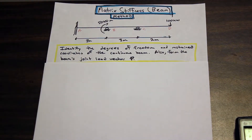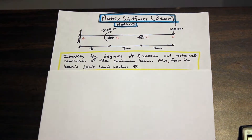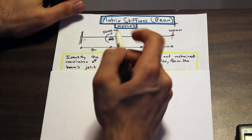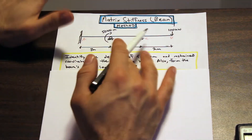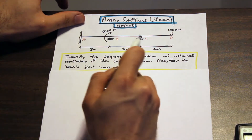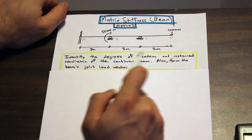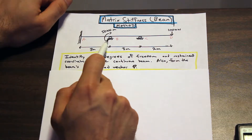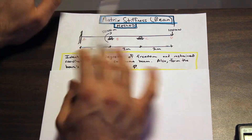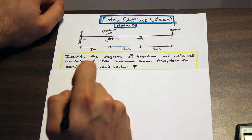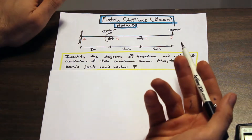We're probably going to need to identify a few of the terms so you're not confused. The degrees of freedom refer to any joint on the beam — any support or point where the moment of inertia changes. Restrained coordinates are essentially where the beam cannot move. We're not considering x-movement in this beam — we're ignoring that. And the beam's joint load vector P is essentially the point loads acting on the degrees of freedom.